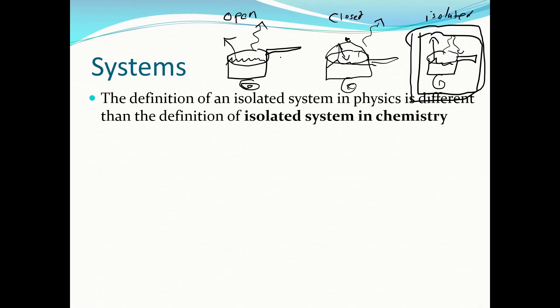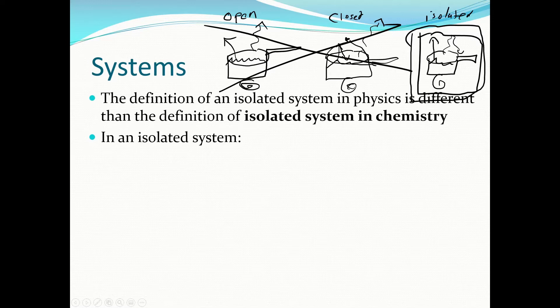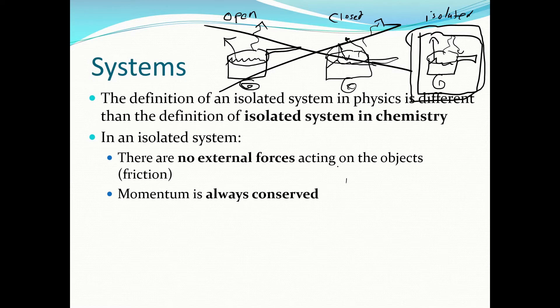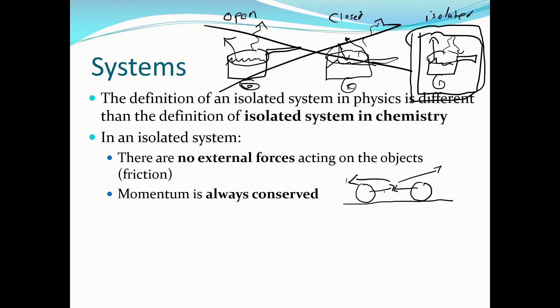That chemistry definition is not what we use in physics — don't use that here. In physics, an isolated system is momentum-based and totally different. There are no external forces acting on objects — for example, no friction. If you have an isolated system, momentum is always conserved. Usually we're talking about a collision: ball A and ball B roll, hit each other, and bounce — that's an example of an isolated system because there's very little friction and no external forces.